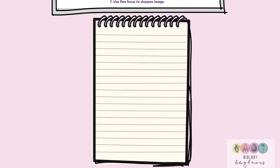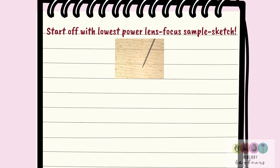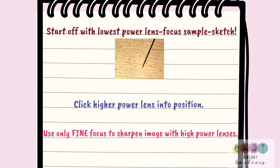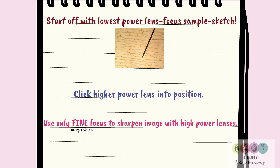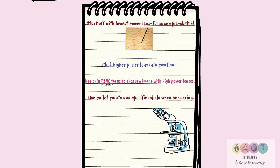Always start off with the lowest power lens, focus the sample, and then draw your sketch with key labels. Click the higher power lens into position after this, and then only use the fine focus to sharpen the image with the high power lenses. Use bullet points and specific labels when answering, and use key terminology like the parts of the microscope in your answers.